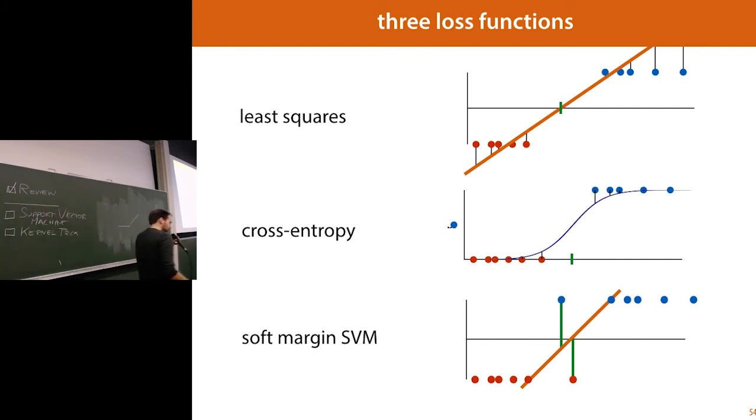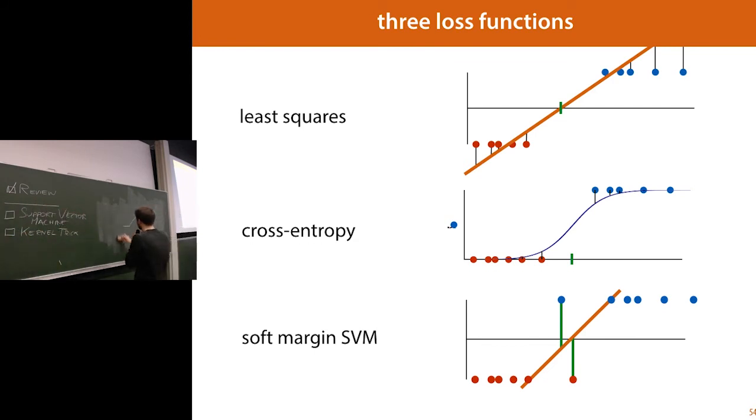We've now discussed three loss functions for linear classifiers: the least squares classifier, which ties rubber bands to all points and the further out they are the stronger they pull; the cross-entropy with sigmoid function, which gives biggest pull near the decision boundary; and the soft margin SVM, which almost ignores points far from the boundary and determines the line based on points closest to it — those are the points that give you the most information about where to draw the line.